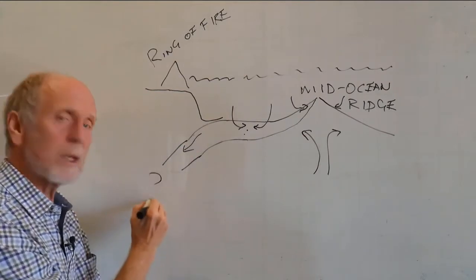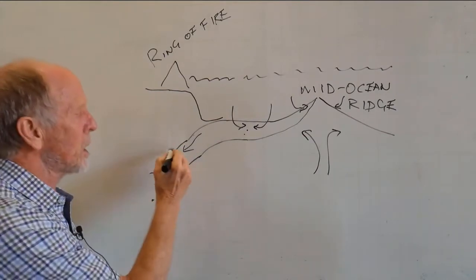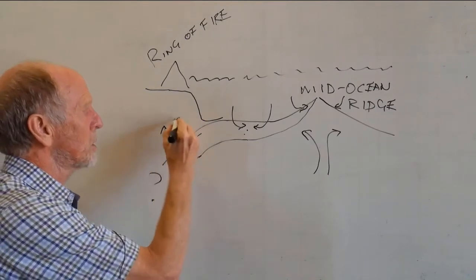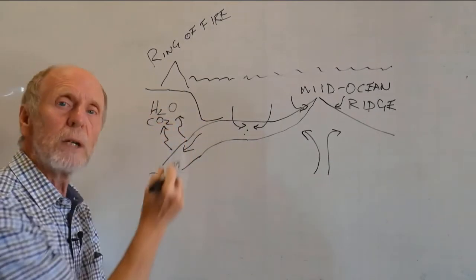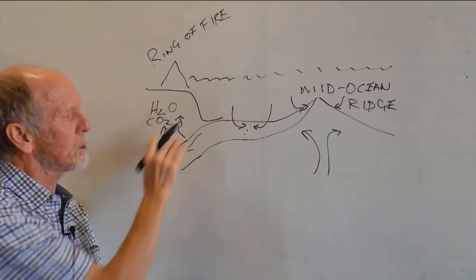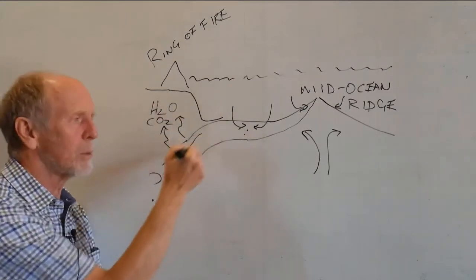The question becomes, of course, well, how far down do they go? Some of them get released. So now we've got water and carbon dioxide being released into this part of the Earth's mantle, overlying the subducting plate.